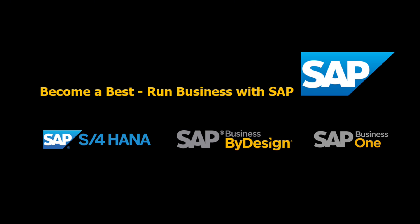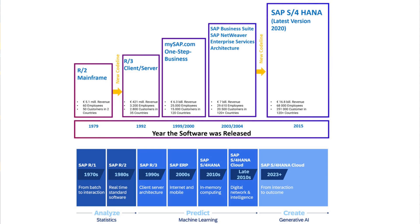SAP S/4HANA is a highly complex ERP solution, primarily designed for large enterprises operating across multiple industries, requiring deep control and possessing substantial budgets to maintain system operations annually. The illustration provided here shows the development timeline of SAP S/4HANA. The term HANA, or SAP HANA, refers to a new database technology that SAP SE began integrating into its ERP products. Consequently, ERP products now include HANA in their names, such as SAP S/4HANA — SAP's fourth-generation ERP — or SAP Business One HANA, which is SAP Business One using SAP HANA as its database platform.